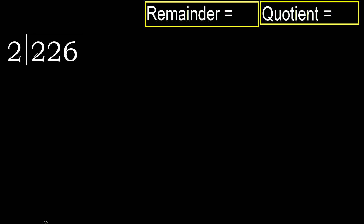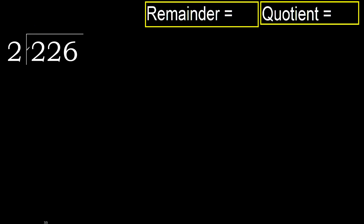226 divided by 2. Start with 2: 2 multiplied by which number is nearest to 2 but not greater? 2 multiplied by 2 is 4, which is greater. 2 multiplied by 1 is 2, it is not greater. So the answer is 1.